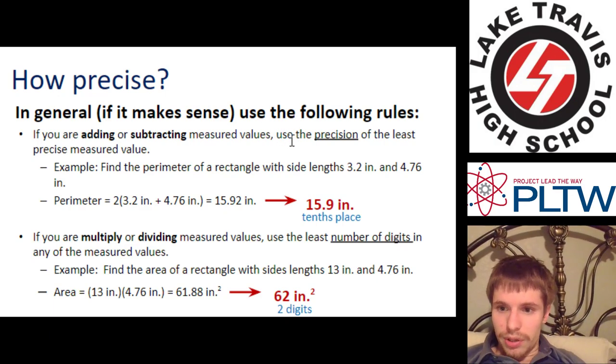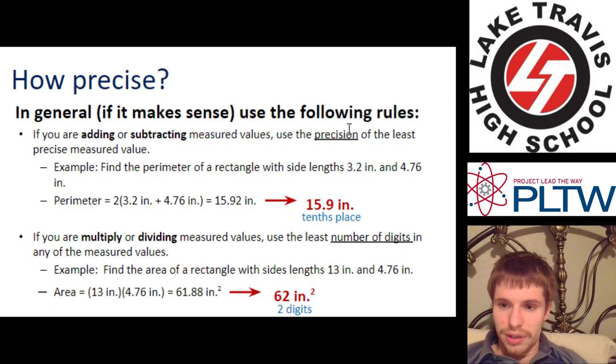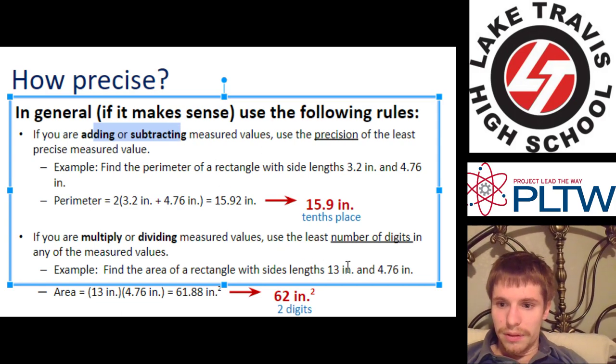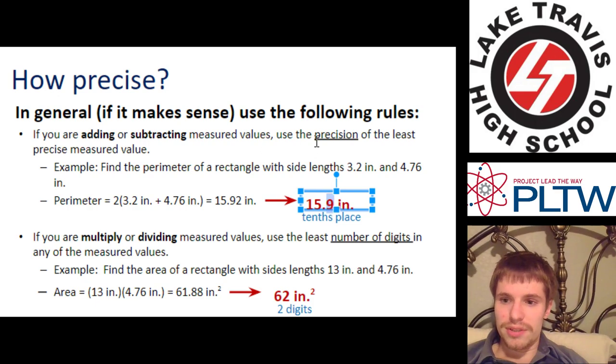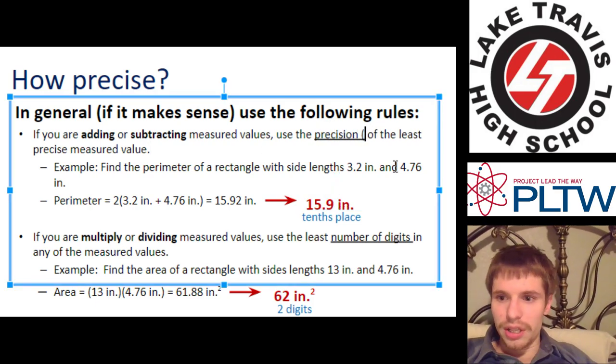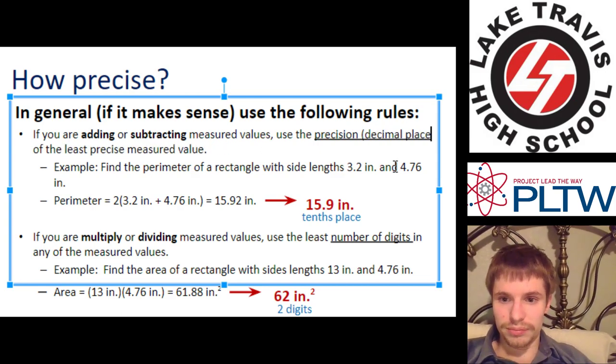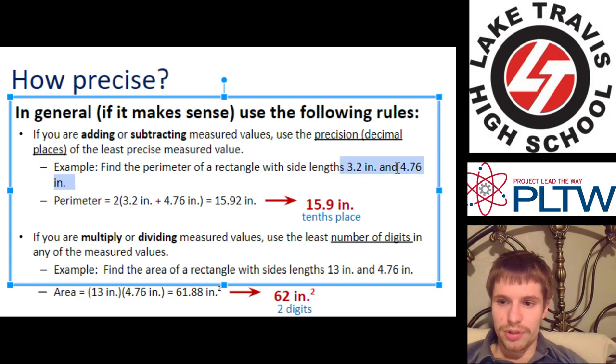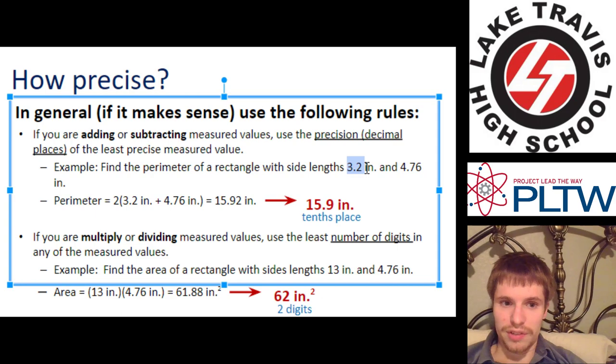Now here are the rules. Here are the big rules. For adding and subtracting, use the precision. So that is the decimal places. I would probably call that or at least clarify here, decimal places. That's when adding and subtracting. When adding and subtracting, round to that nearest decimal place that is the nearest decimal place here. And that's the least precise value. So you look at your two measured values here. I've got 3.2 and I've got 4.67. How many decimal places does this one have? It's two. How many decimal places does this one have? It's only one decimal place past the decimal. So we round to that tenths place there. We round to the tenths place because we're adding for perimeter.